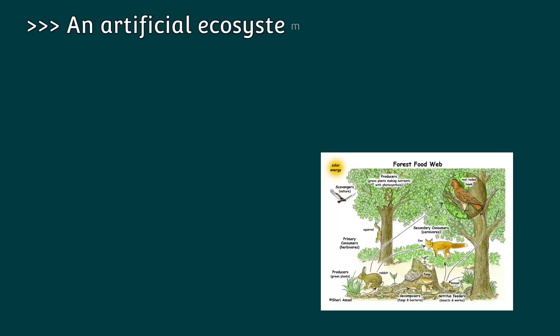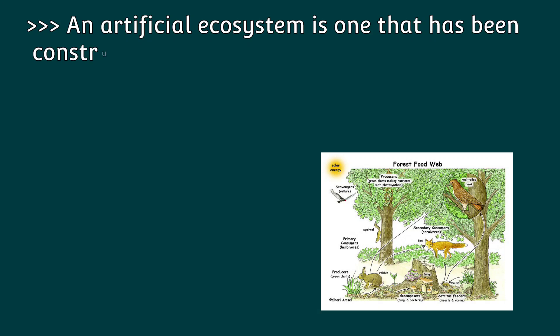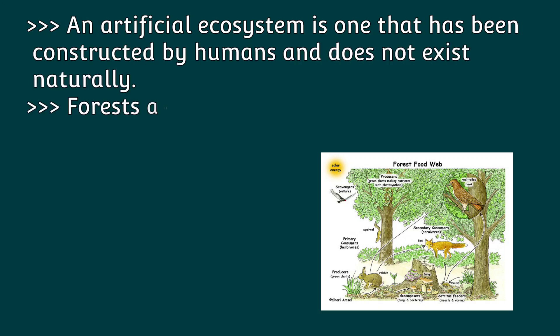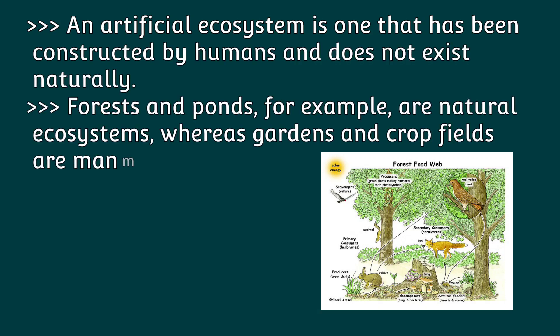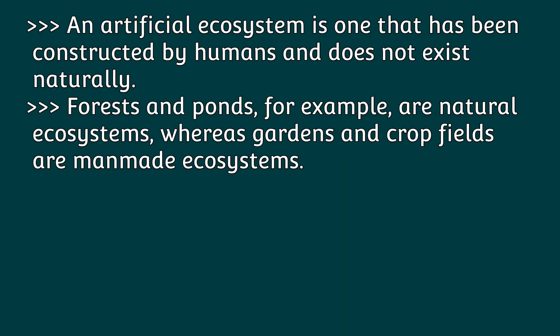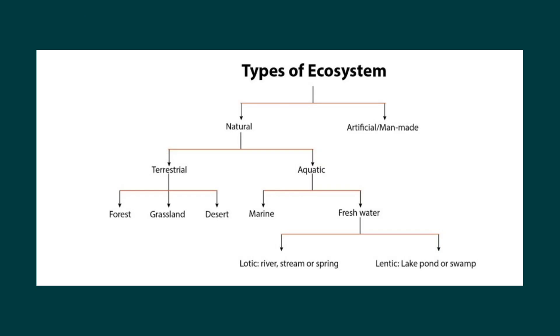An artificial ecosystem is one that has been constructed by humans and does not exist naturally. Forests and ponds are examples of natural ecosystems, whereas gardens and crop fields are man-made ecosystems. This picture shows the types of ecosystems.